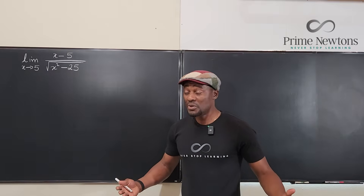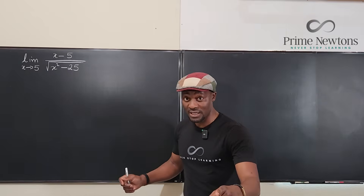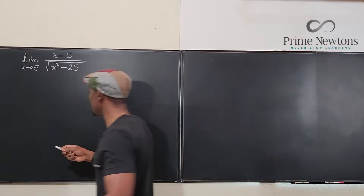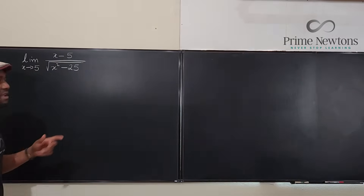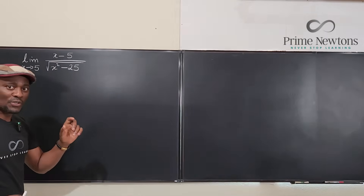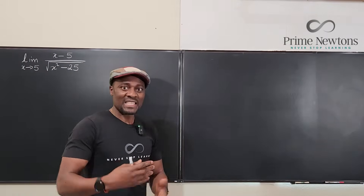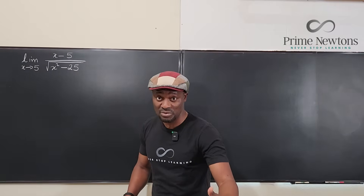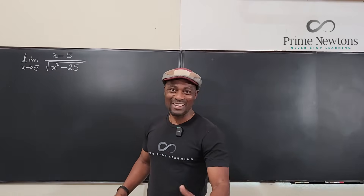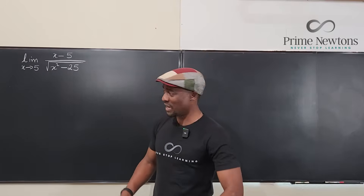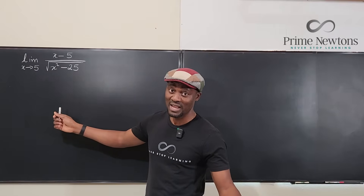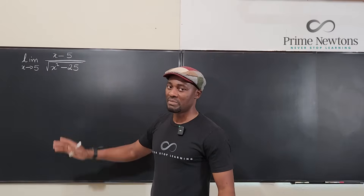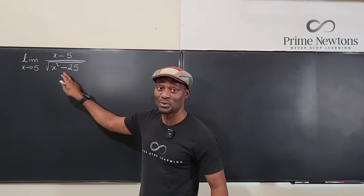If I was asked to compute this limit and I was not a student, what would I do? If I plug in five immediately I'm going to get zero over zero, so this is an indeterminate form. Instead of that, I'll do some algebraic manipulation rather than L'Hôpital's rule, because L'Hôpital's rule will be nasty with the square root sign underneath. This is easy because it's a difference of two squares.